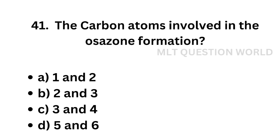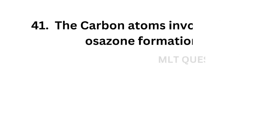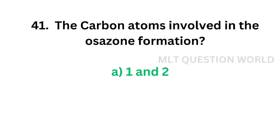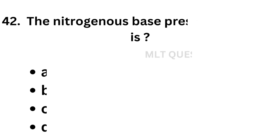Question number 41: The carbon atoms involved in osazone formation — option A: carbon atoms 1 and 2, option B: carbon atoms 2 and 3, option C: carbon atoms 3 and 4. The correct answer is option A, carbon atoms 1 and 2. Osazone formation is the reaction of reducing sugars with phenylhydrazine, and the carbon atoms involved are 1 and 2.